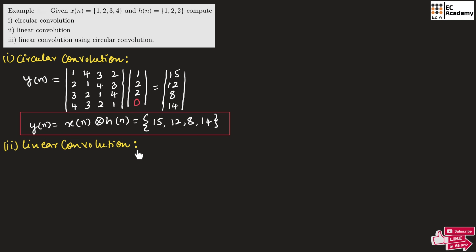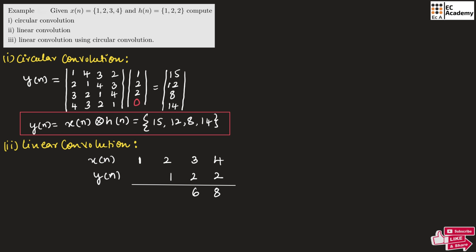Now let us find the linear convolution. We write x of n as 1, 2, 3, and 4, and h of n as 1, 2, and 2. We multiply: 4 into 2 is 8, 3 into 2 is 6, 2 into 2 is 4, and 1 into 2 is 2. Then for the second value of h of n, we leave the first place blank and multiply: 4 into 2 is 8, 3 into 2 is 6, 2 into 2 is 4, and 1 into 2 is 2.